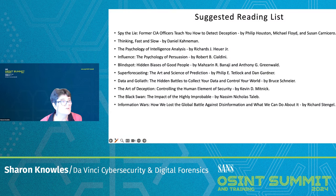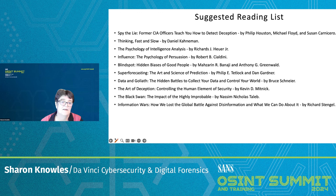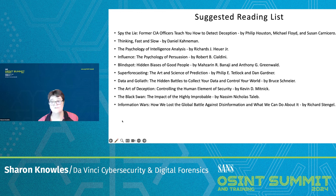I'll end with a suggested reading list: Spy the Lie — former CIA officers teach you how to detect deception; Thinking Fast and Slow; The Psychology of Intelligence Analysis; Influence: The Psychology of Persuasion; Blind Spot: Hidden Biases of Good People; Superforecasting: The Art and Science of Prediction; Data and Goliath: The Hidden Battles to Collect Your Data and Control Your World; The Art of Deception: Controlling the Human Element of Security; The Black Swan: The Impact of the Highly Improbable; and Information Wars: How We Lost the Global Battle Against Disinformation and What We Can Do About It.